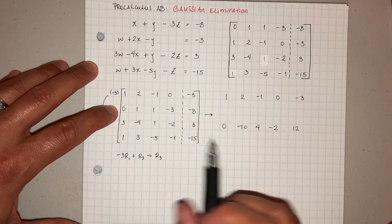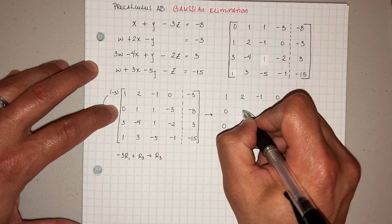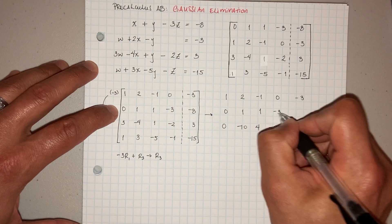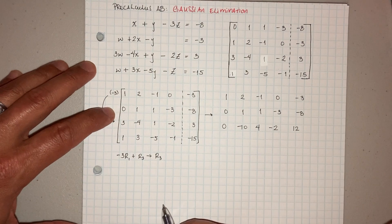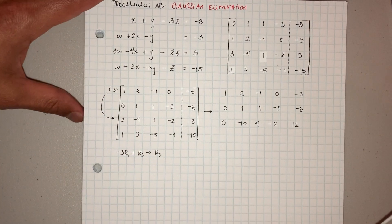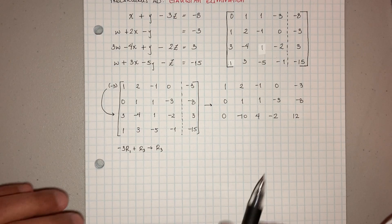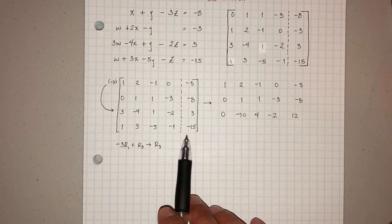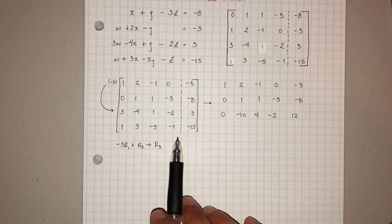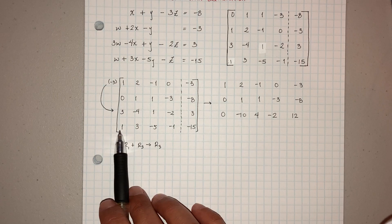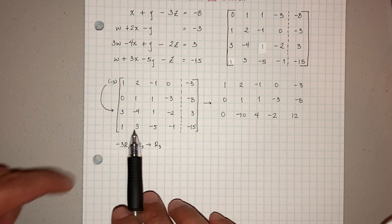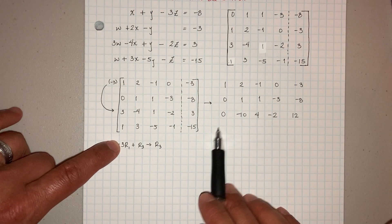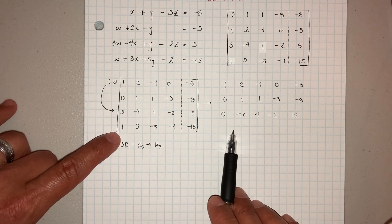Now everything else stays. This guy stays: 1, 2, negative 1, 0, and negative 3. Then this guy's already a 0, which is nice — 0, 1, 1, negative 3, and negative 8. Now I'm also going to make this other entry a 0, so I want all 0s in this first column.